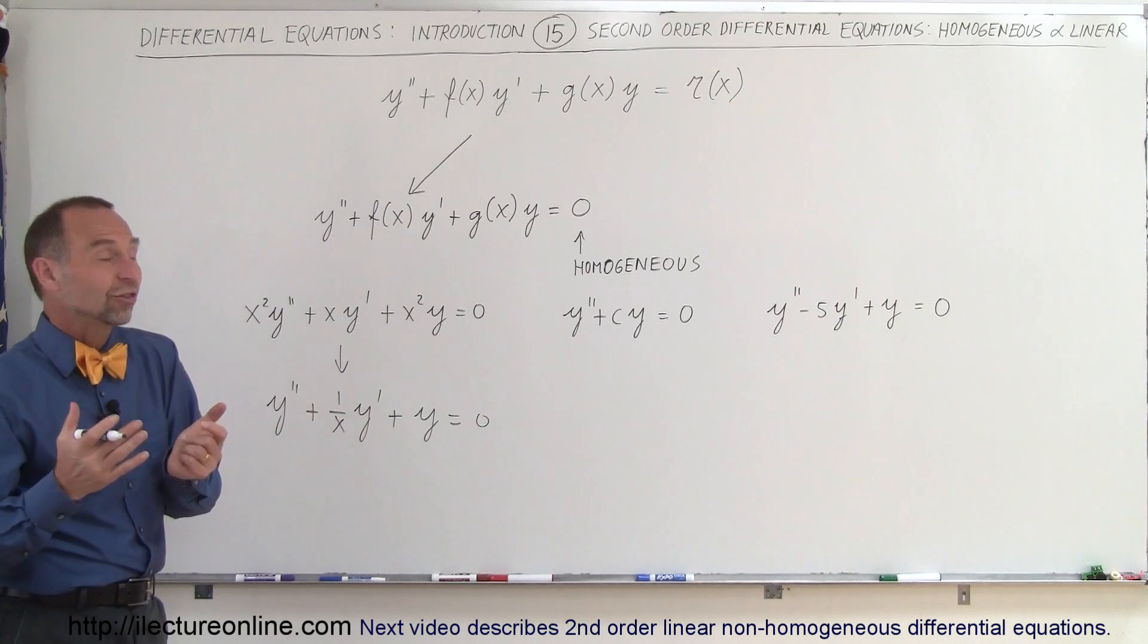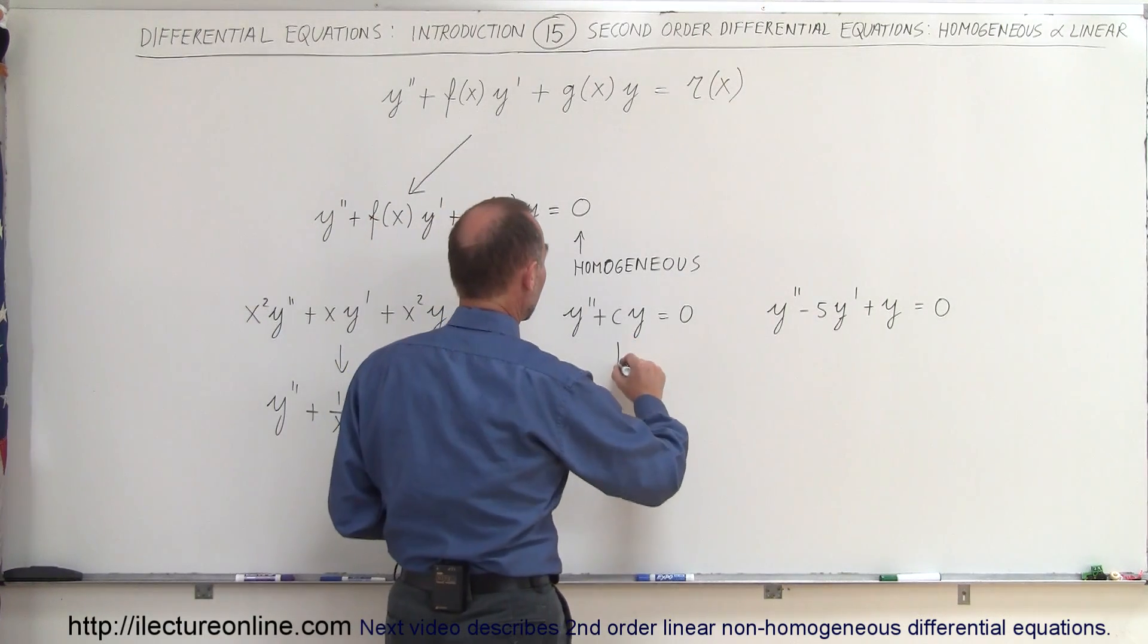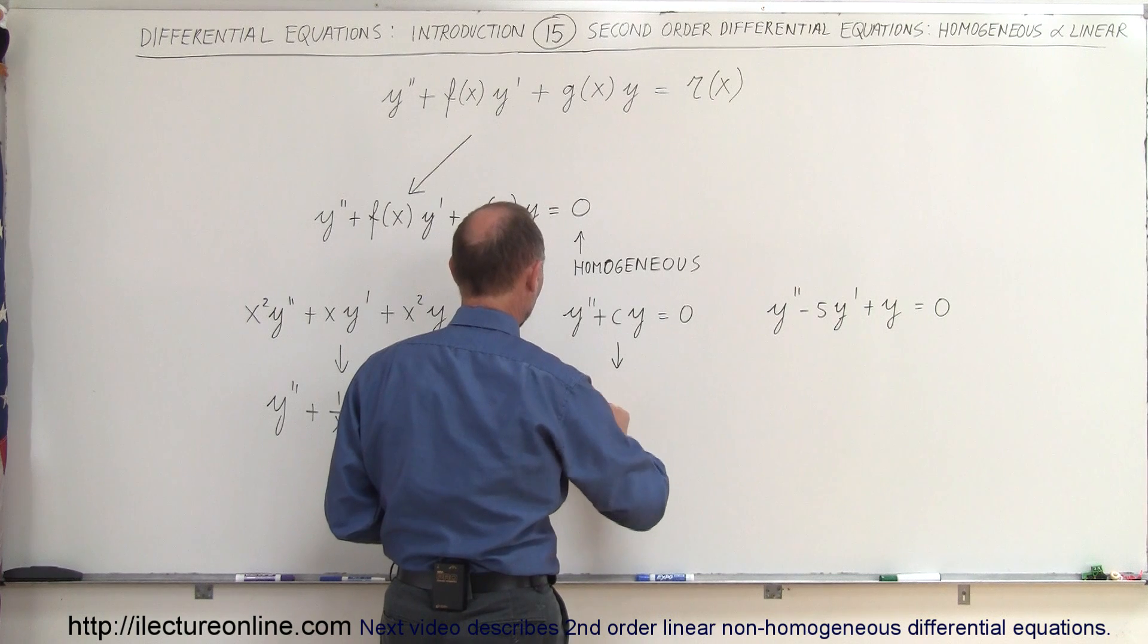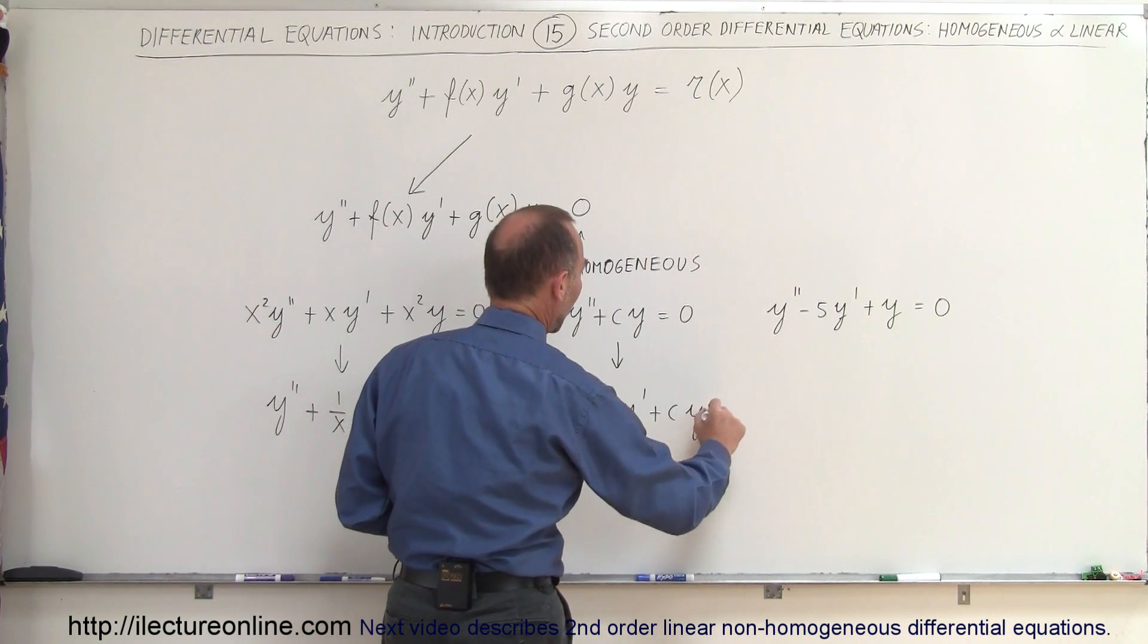That one here, notice there is a term missing, the y prime term is missing, so really what this means is that this is equal to y double prime plus zero times y prime plus some constant times y equals zero.